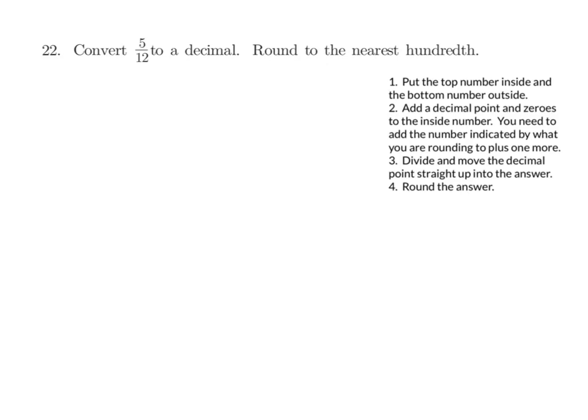Last one. We want to convert a fraction to a decimal. Another thing that we want to pay attention to is we want to round to the nearest hundredth. So remember that when we divide, we put the 5 inside. We always put the top number inside. And the bottom number always goes outside. I'm going to add a decimal point, and I'm going to add my 0's. So 2 0's, that gives me 2 hundredth. But remember that we want 1 more so that we can determine whether it rounds up or down. Alright, so we are ready to divide now. 12 goes into 50, 4 times. Remember to line up your answer with the rightmost digit that you're working with.